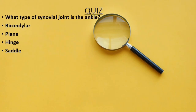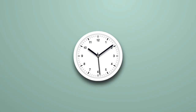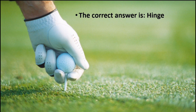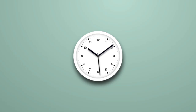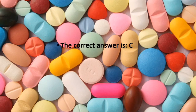Quiz. Question 1: Which type of synovial joint is the ankle? Bicondylar, plane, hinge, or saddle? The correct answer is hinge. Question 2: Below is an illustration of the ankle joint — which label corresponds to the anterior talofibular ligament? The correct answer is C.